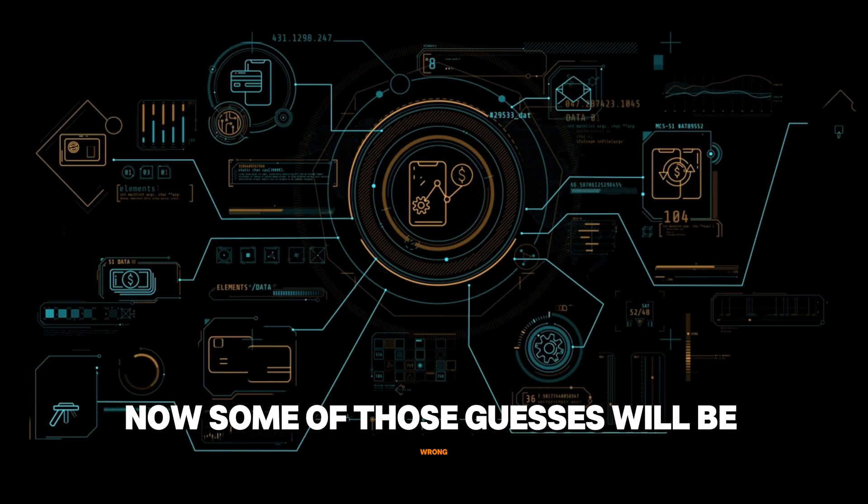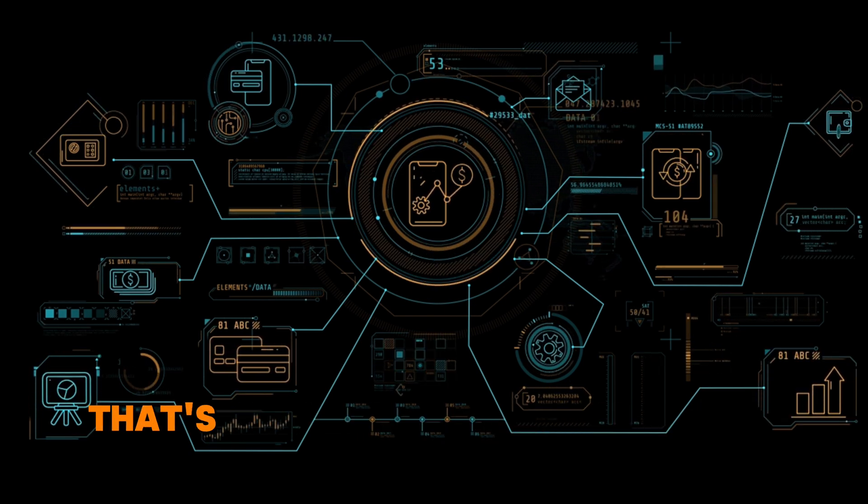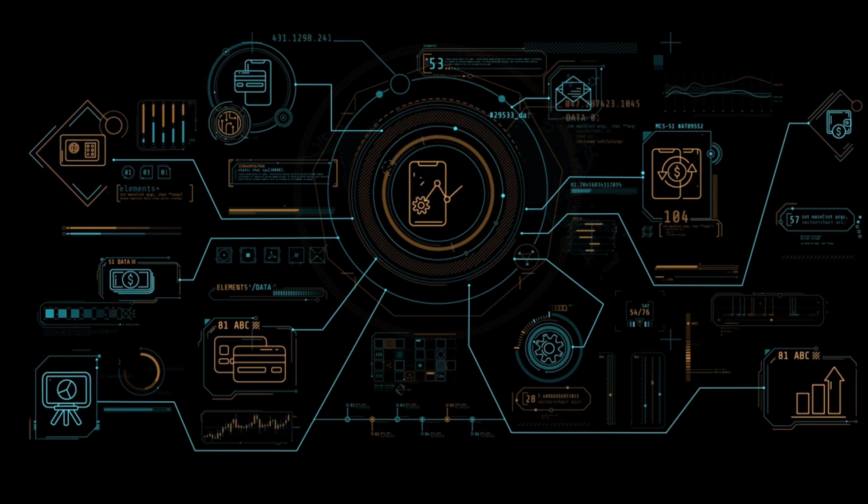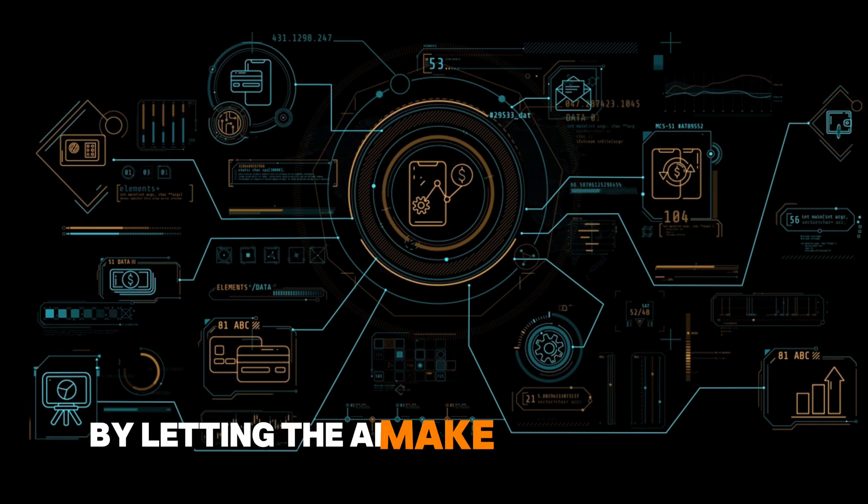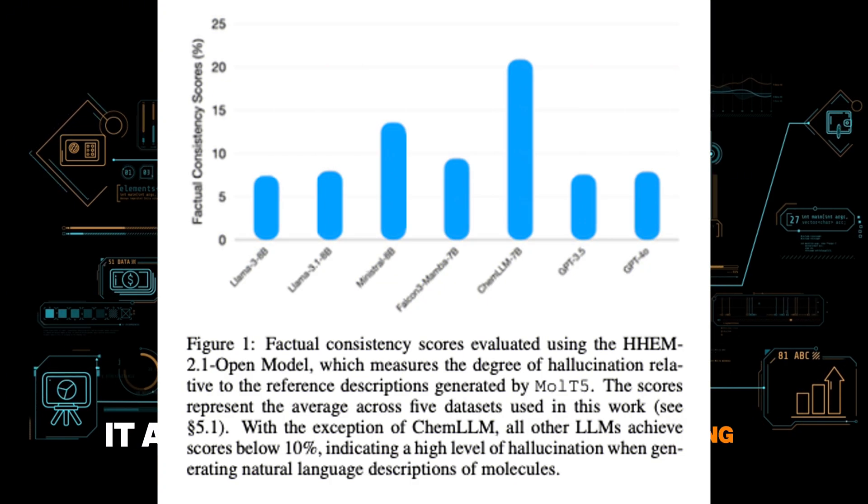Now some of those guesses will be wrong. But one of them might just crack the case. That's exactly what happened in this study. By letting the AI make creative errors, it actually got better at predicting which molecules could be useful in medicine.